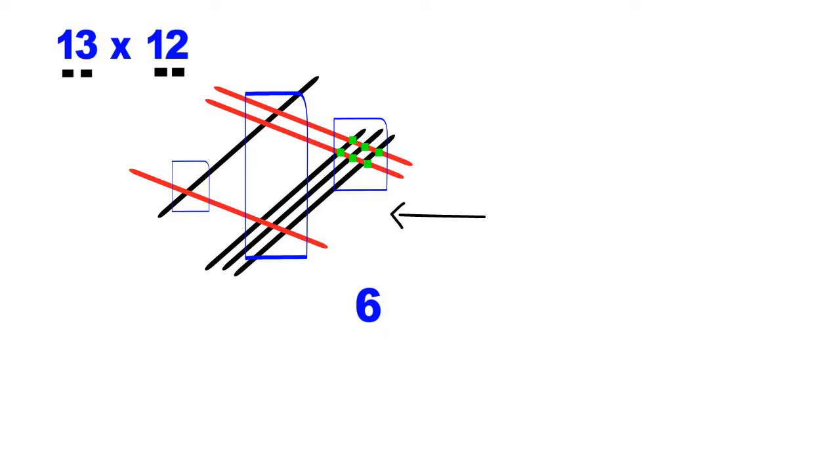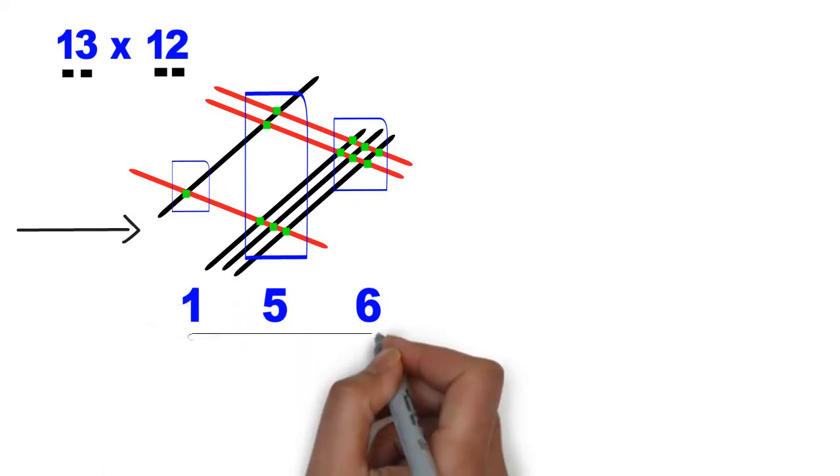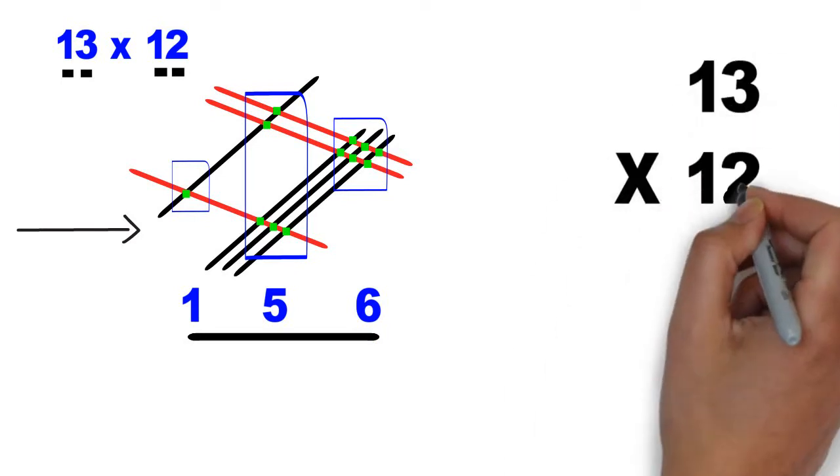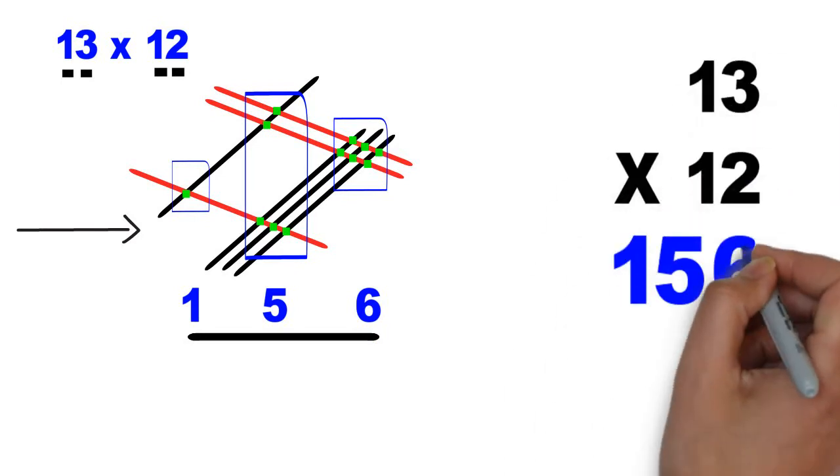And now, we move on to the second zone from right. How many intersections in this zone? 1, 2, 3, 4, and 5. 5 intersections. So, we write 5 here. And now, we move on to the last zone. There is just one intersection here. Which is why we write here 1. Well, that's our answer, guys. 13 times 12 is 156.